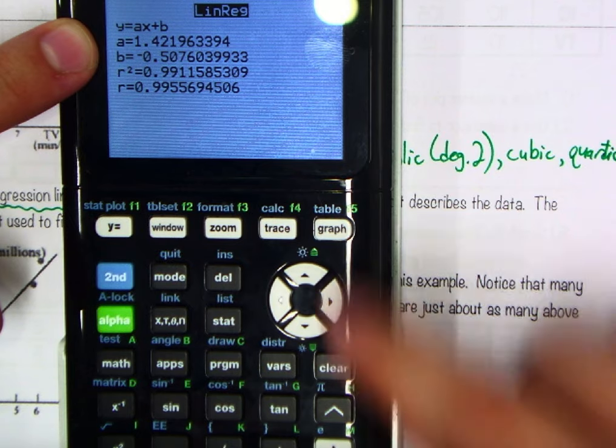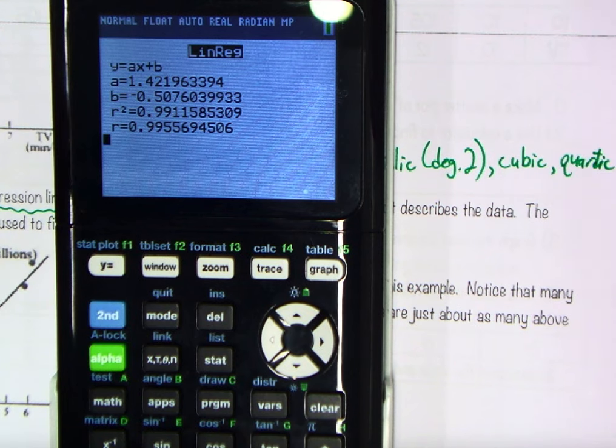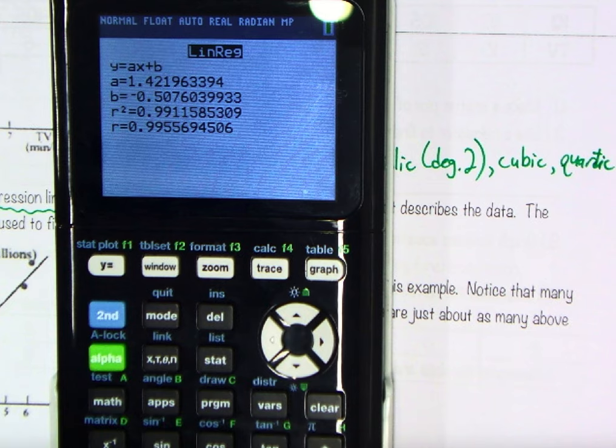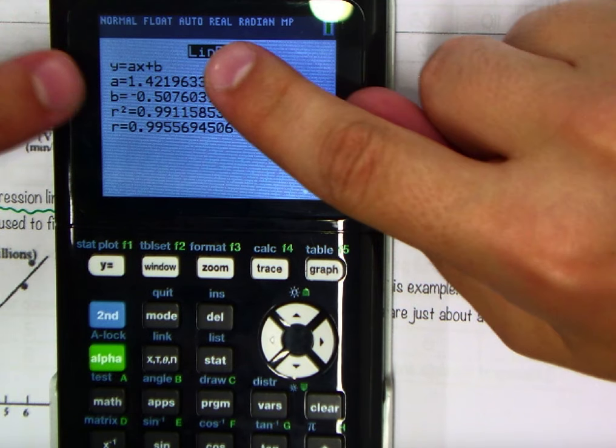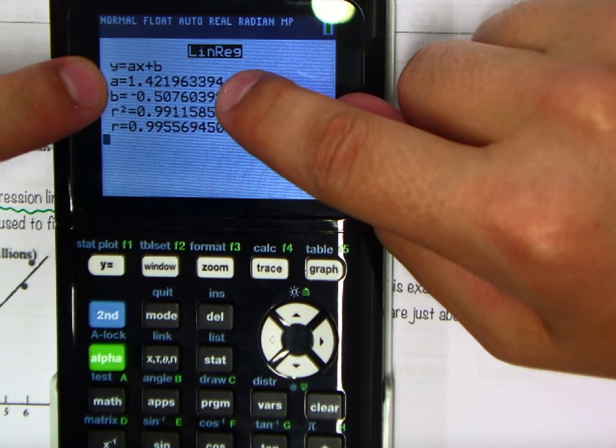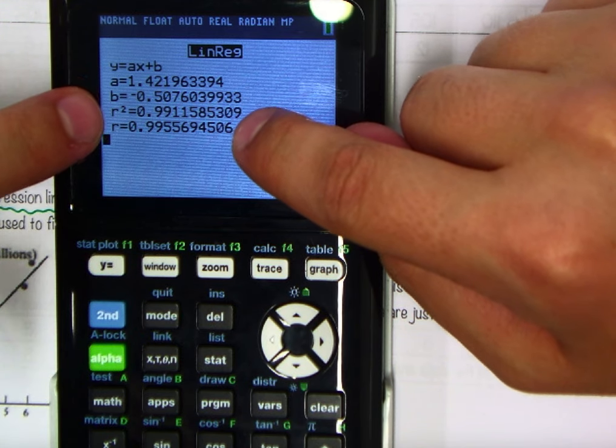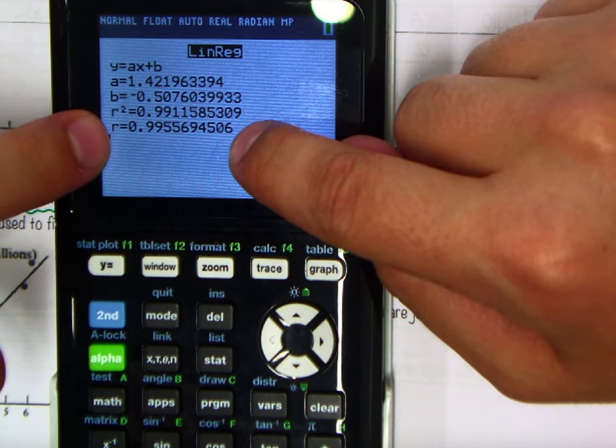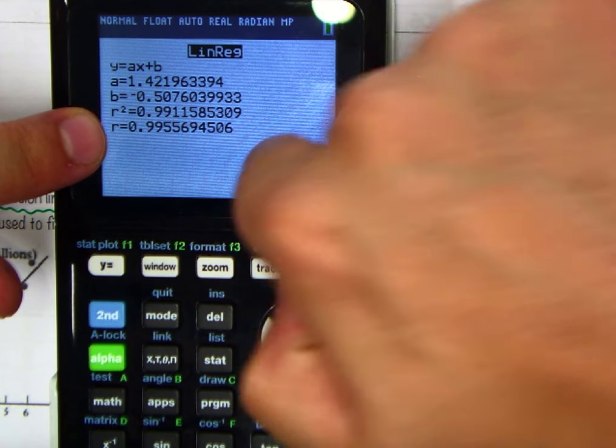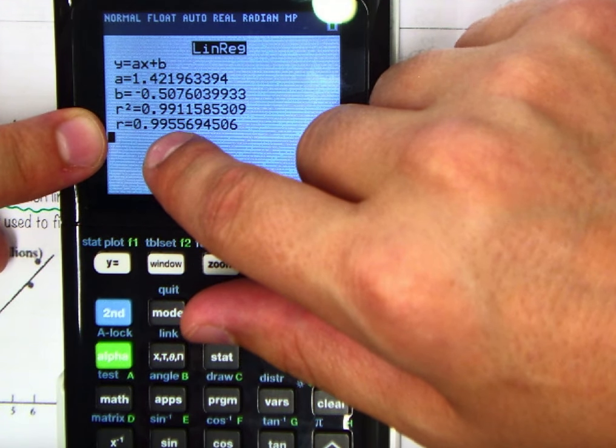And you will see all these nasty looking decimals, right? Well, it just went through a process known as least squares regression. That's the method that all these calculators use, in order to come up with a line of best fit by some sort of criteria, and there are different criteria to do that, but in this case, it's telling us our slope is about 1.42, our initial value would be about negative 0.5, and then I want everybody just to look at the r value. This is what we know as our correlation coefficient. We're going to define that more clearly here in just a little bit.